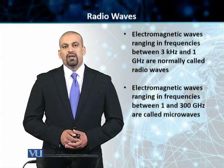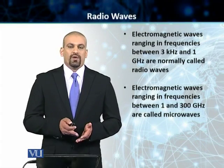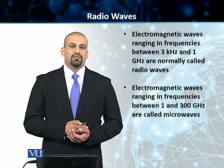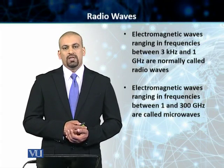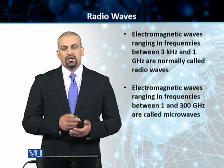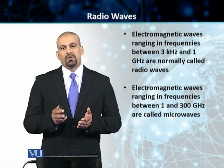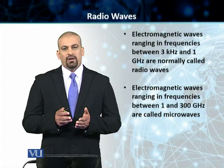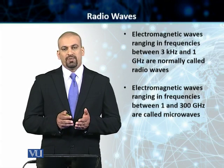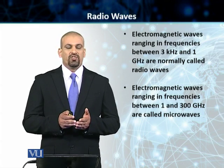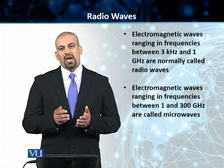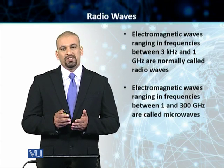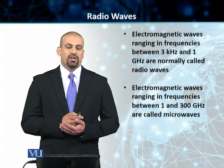Now we will talk about the radio waves, the second type of our unguided media. From a spectrum perspective, the electromagnetic spectrum which is between 3 kHz and 1 GHz is dedicated to radio waves.